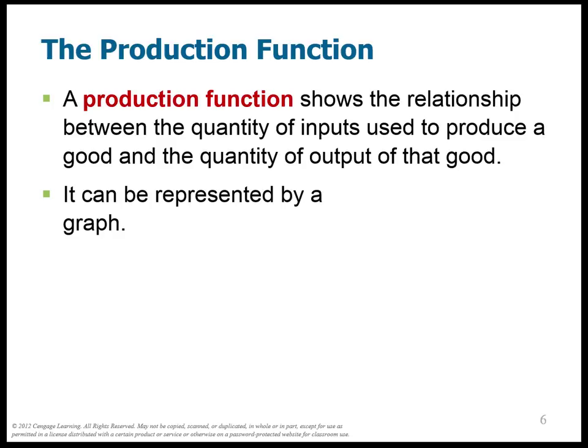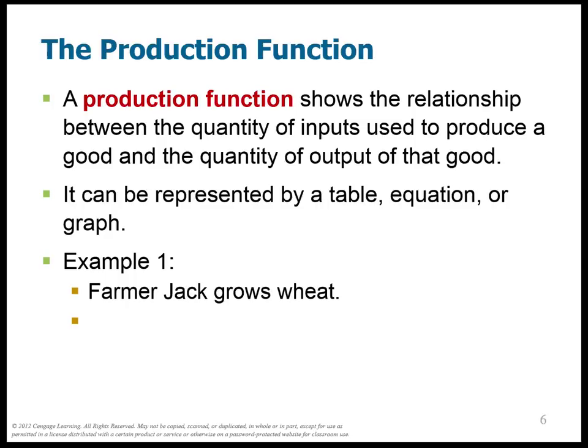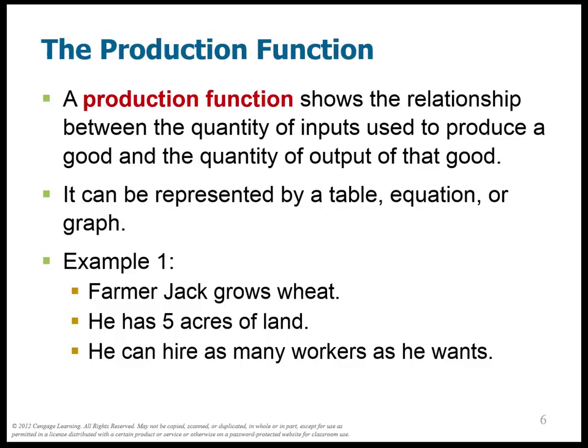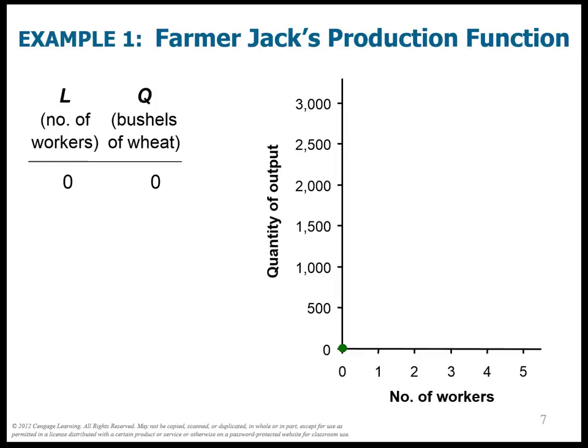Here's an example. Farmer Jack is growing wheat. He has five acres of land and can hire as many workers as he wants. If he ends up hiring zero workers, he produces zero wheat — that gives us an output of zero on the graph. If he hires one person, he produces 1,000 bushels of wheat, and we have the corresponding point on our graph. Hire another person and we can make 1,800 bushels. Let's keep doing this for up to five workers.